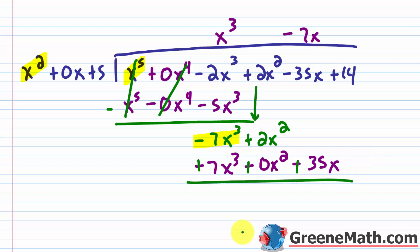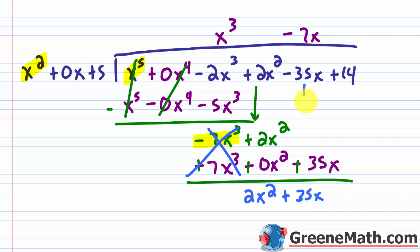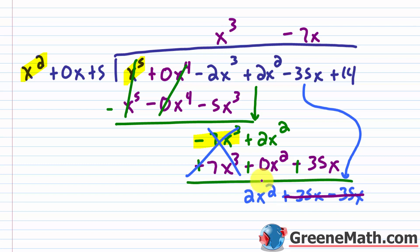After changing signs and adding: the negative 7x cubed terms cancel. We have 2x squared plus 0x squared, which is just 2x squared. Then we have plus 35x. Now bring down minus 35x from the dividend. Since 35x minus 35x equals zero, those terms cancel out, and we're just left with 2x squared.